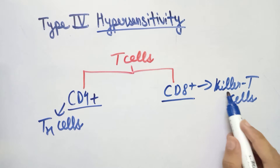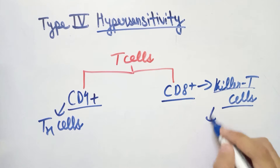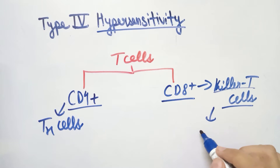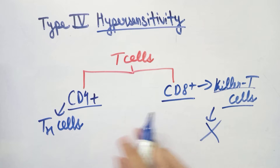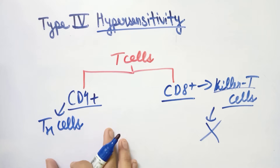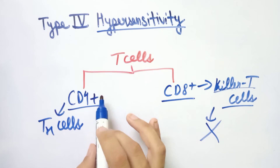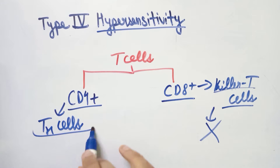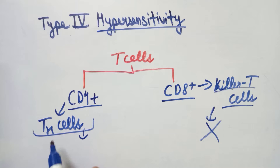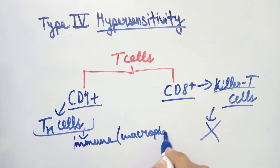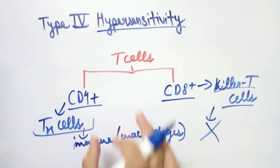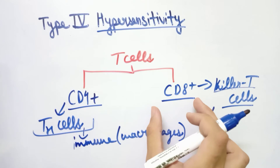As the name suggests, killer T cells directly kill their target. If any foreign or self antigen enters the host body, these killer T cells will directly attack and kill it. However, when CD4+ T helper cells respond to foreign antigens, they do not kill the antigen by themselves. Instead, they induce an immune response from other cells such as macrophages or monocytes.